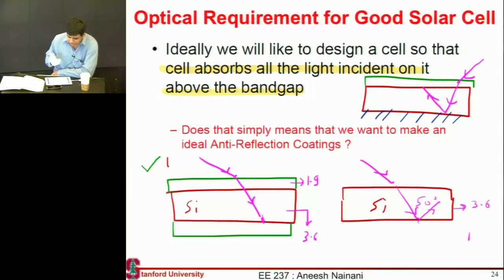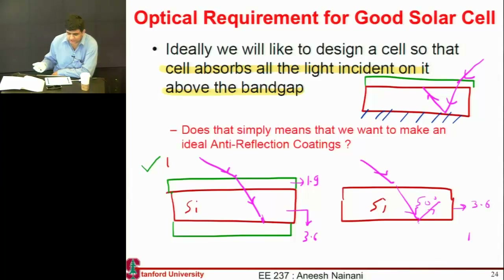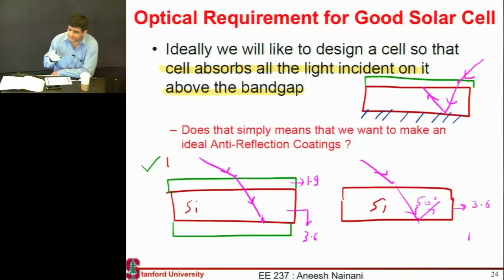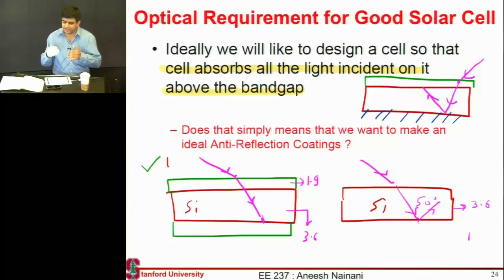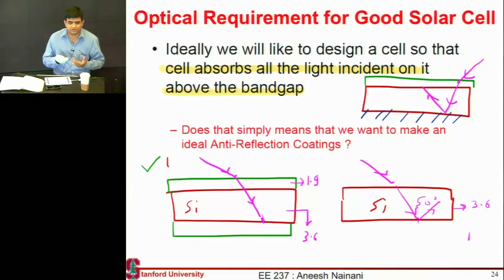Our optics is reciprocal — if something helps enhance absorption, it also helps get light out of the system. You'll be surprised that the same techniques used to trap light in a solar cell are used in LEDs to get light out. Both are very reciprocal systems in that sense.